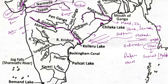The left-bank tributaries of Godavari are Penganga, Wainganga, Indravati, and Sabari river. The right-bank tributaries include Purnah, Pranita, and Munjra river. Coming to the Krishna river, it originates near Mahabaleshwar, flows through Telangana, and drains into the Bay of Bengal.